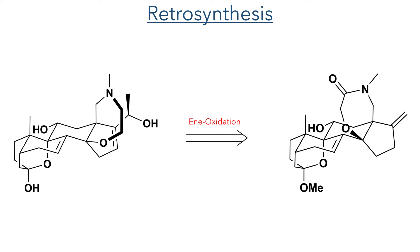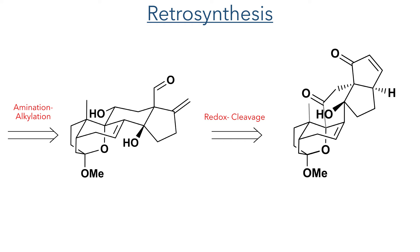The alpha-beta unsaturated alcohol moiety could be installed using a singlet oxygen ene reaction which would oxidize the exocyclic alkene. The lactam ring of this intermediate could be generated using an amination and alkylation sequence using an aldehyde, which could be generated from oxidative cleavage of an alpha-beta unsaturated cyclopentanone.